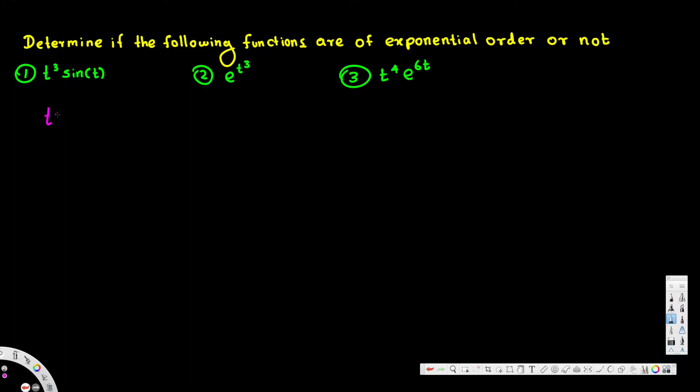To find out, we take the first one, t cubed sine t, and divide by e to the power of something times t. Then we take the limit as t approaches infinity and see if any value of alpha in front of this t can make this equal to zero.